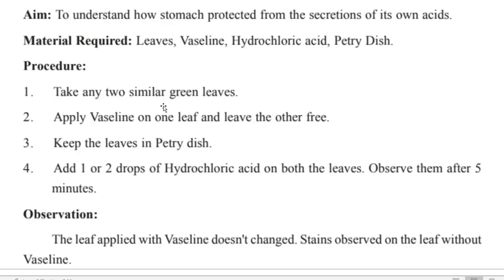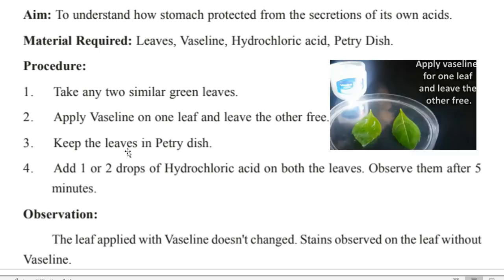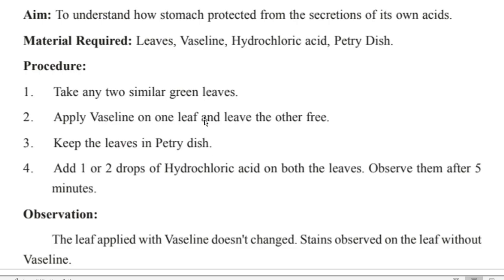Procedure: Take two similar green leaves. Apply vaseline on one leaf and leave the other free. Keep both leaves in a petri dish. Add one or two drops of hydrochloric acid on both the leaves. Observe them for 5 minutes.